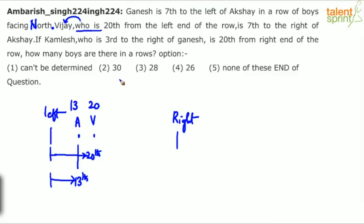Now you can connect it. Vijay is 20th from the left end of the row and he is 7th to the right of Akshay. So from Akshay, if you go towards the right, you will find Vijay on the 7th position. So that second statement has been completely marked properly.